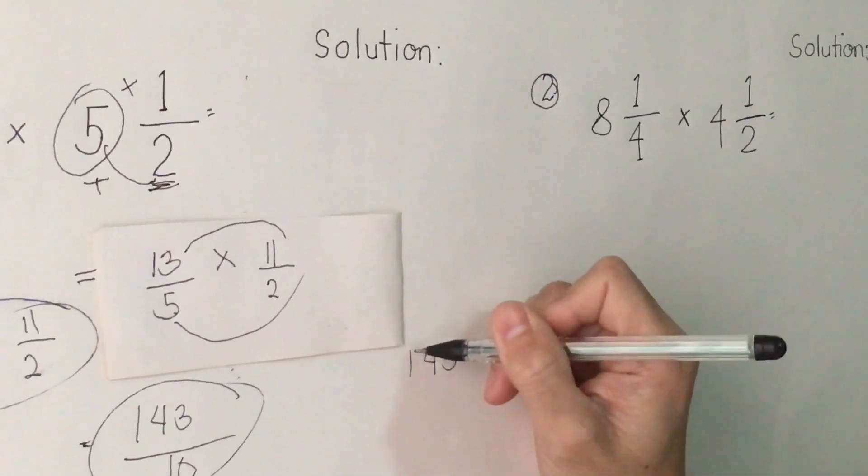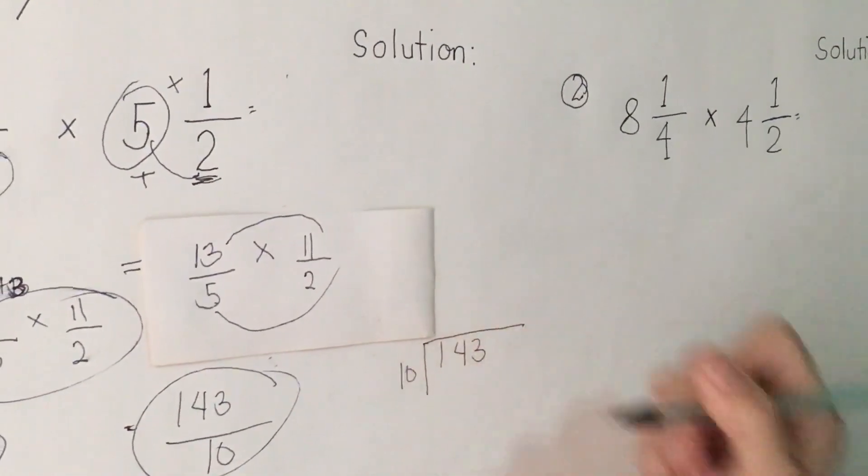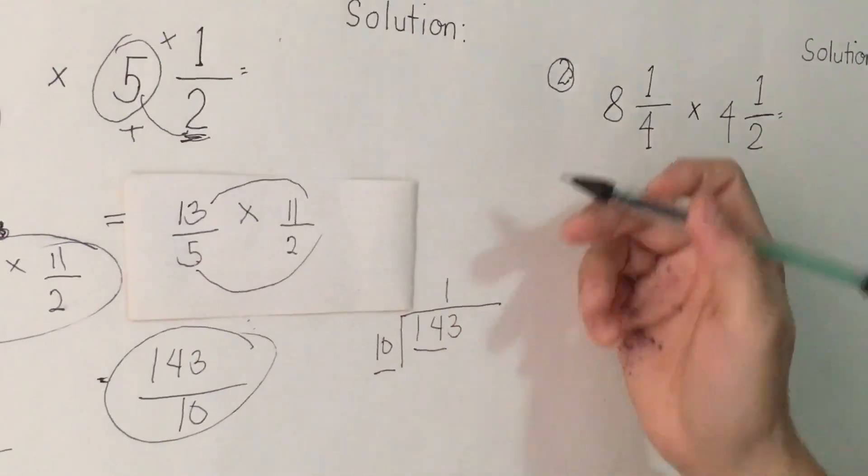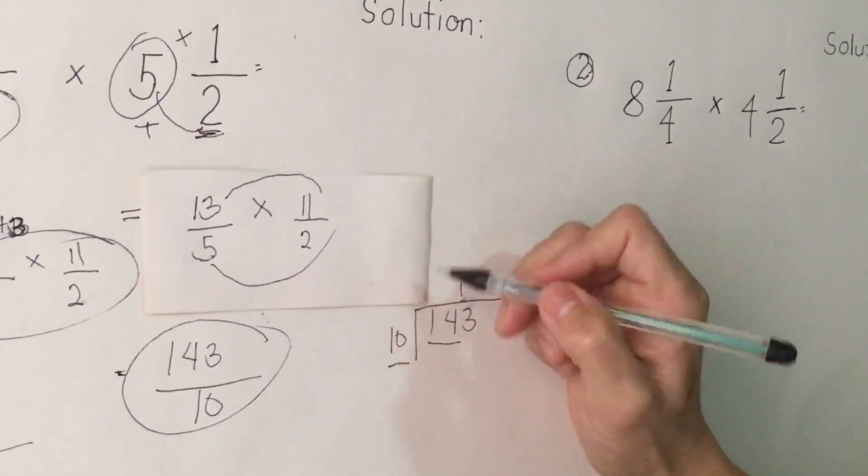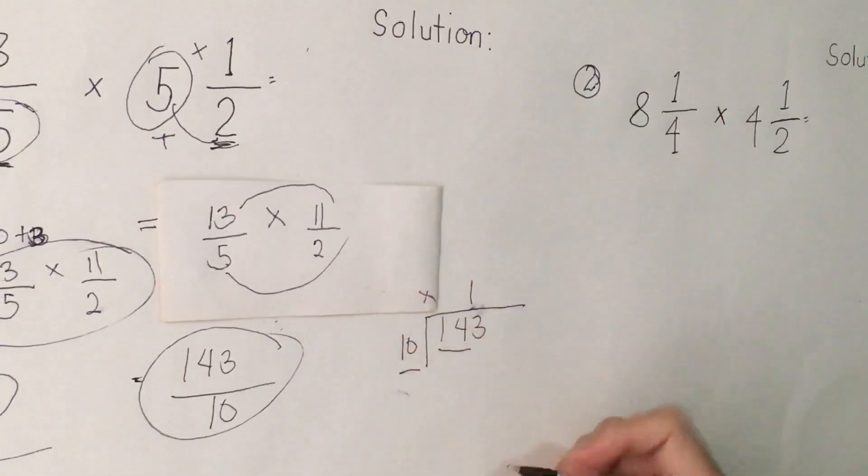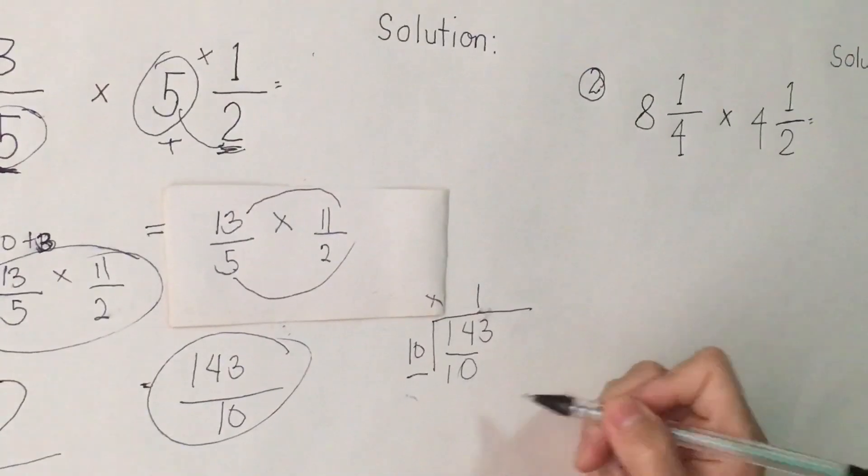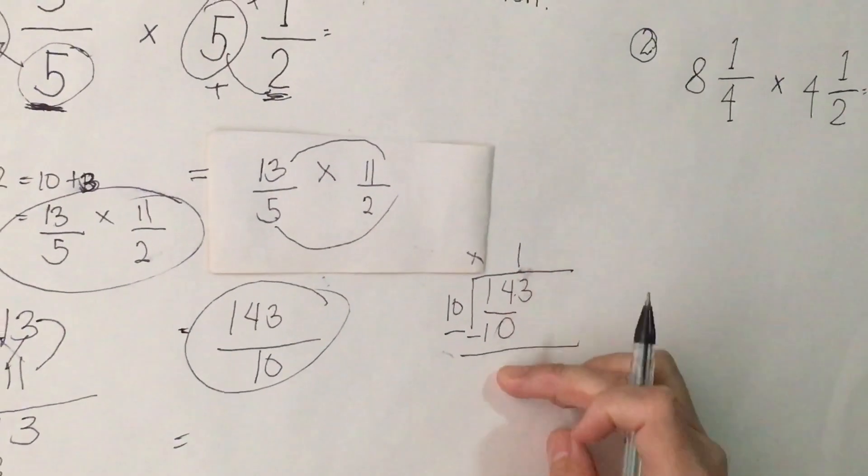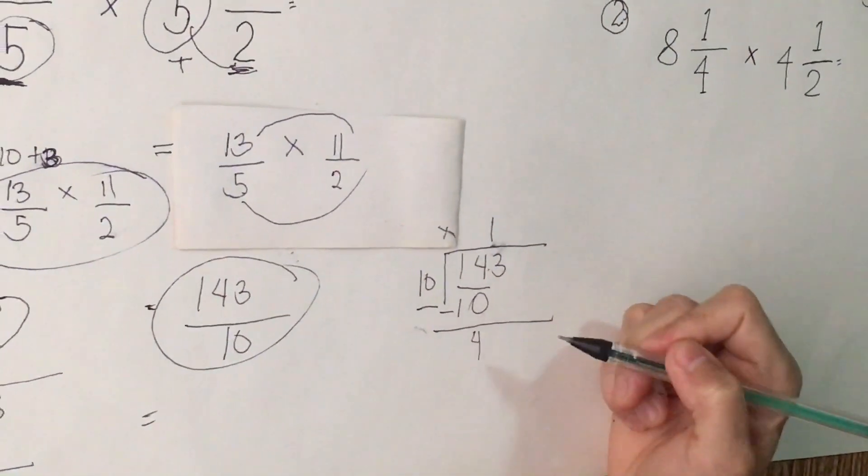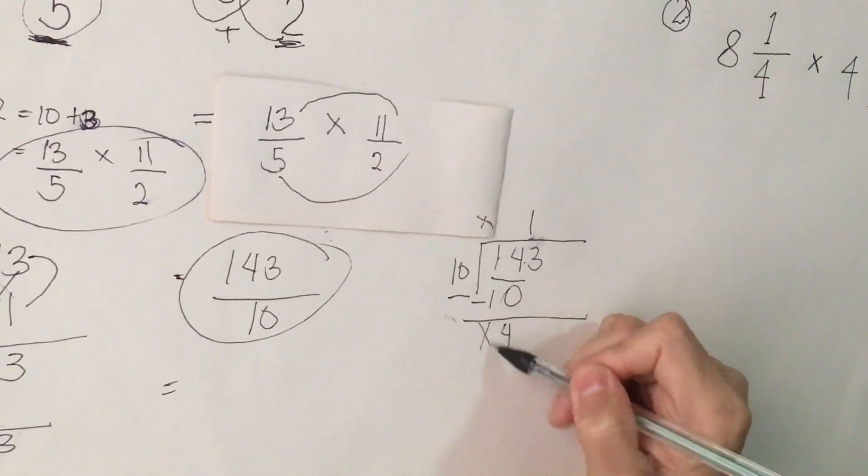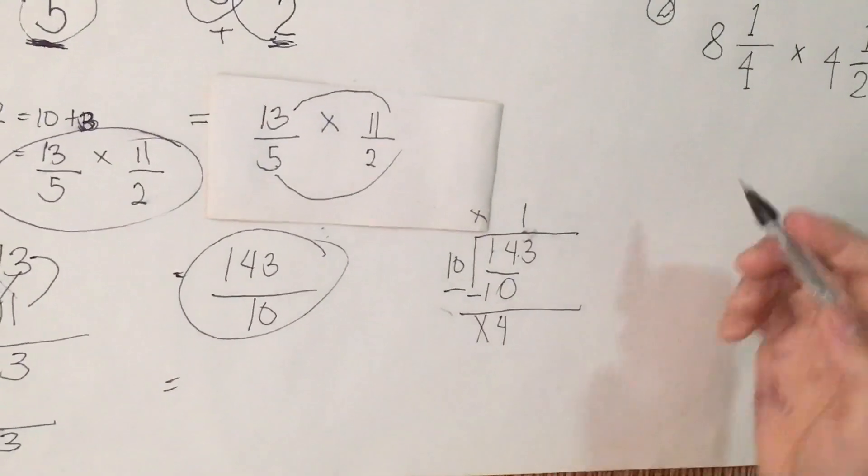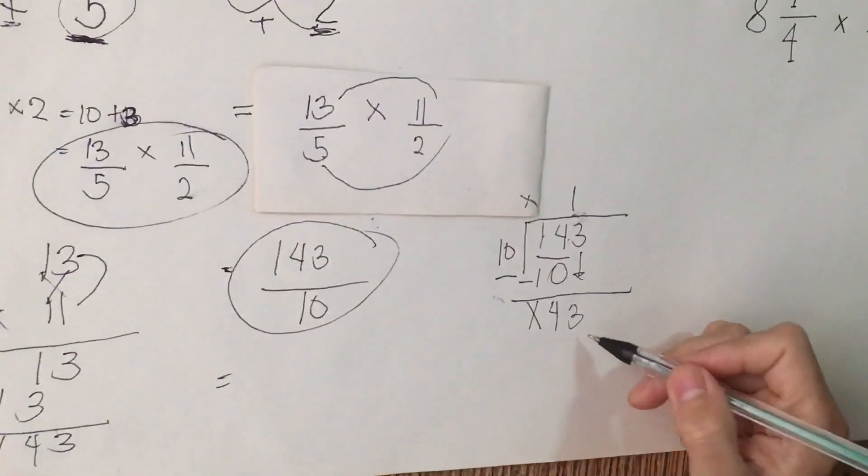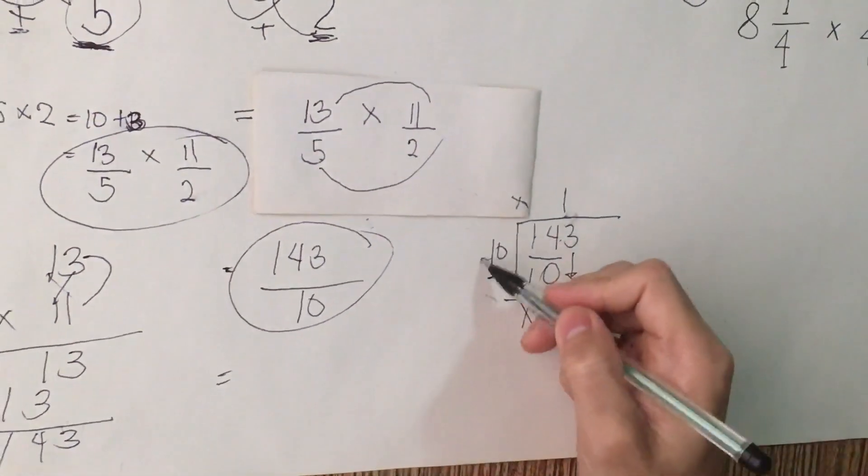143 is our dividend, our divisor is 10. Step by step, 14, we divide to 10, we have 1. Next step, after divide, multiply. 1 times 10, we are going to write here 10. Next operation is we are going to subtract. 4 minus 0, so 4. We are going to bring it down here. 1 minus 1 equals 0, so we are going to write 0. Next thing is we are going to bring down 3. Next is 43.